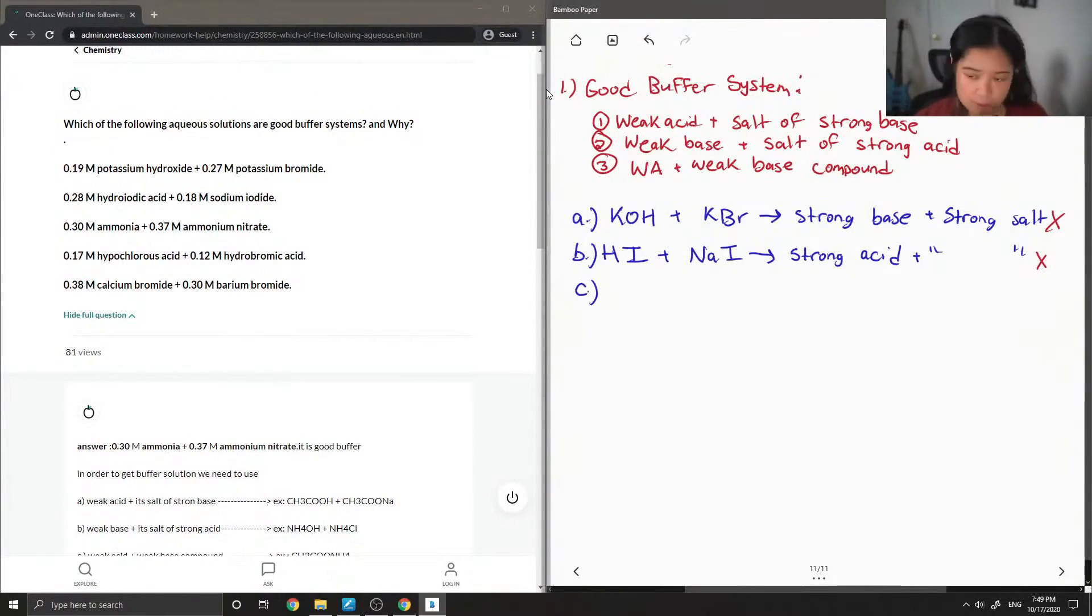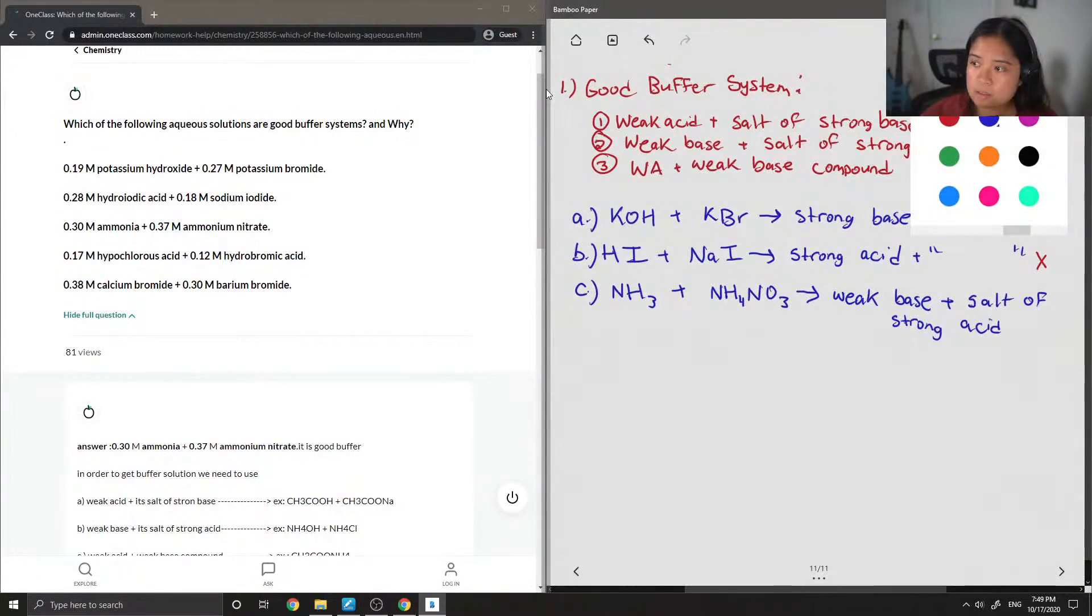Okay, so next we have ammonia, which is NH3, plus ammonium nitrate. So this is NH4 and then NO3. So the ammonia is an example of a weak base. And then our ammonium nitrate is an example of how you'd get a salt of a strong acid, which is the NO3. So therefore this one would be considered a good buffer system. Let's look at our other options anyways.